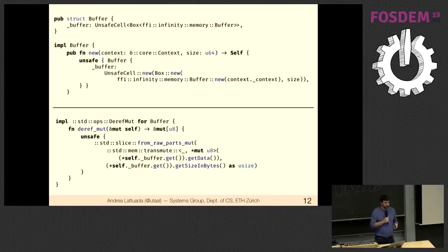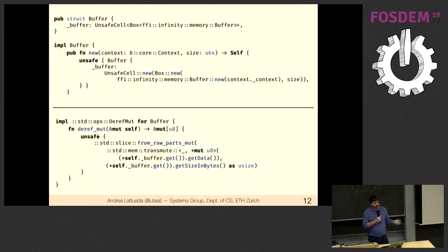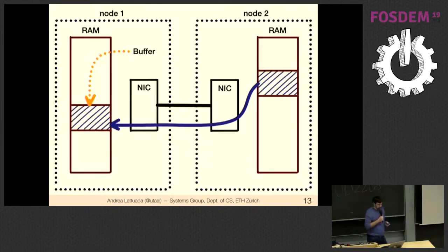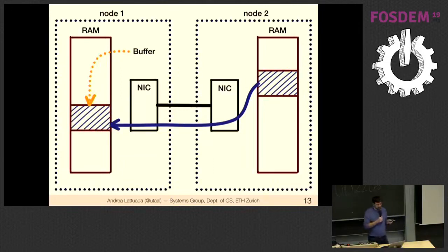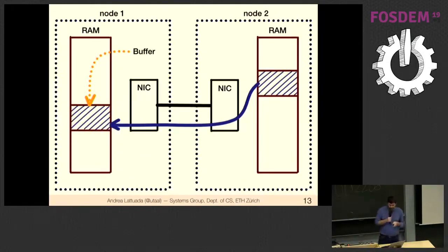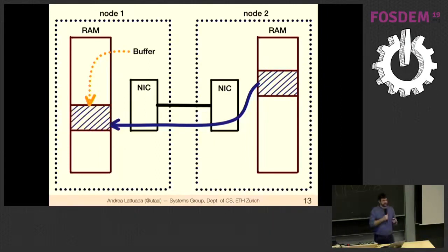We can construct a new buffer by calling through to C++, and we can grab a mutable reference to the underlying memory slice to read and write from it. There's a DerefMut implementation shown, plus a Deref implementation that allows multiple immutable references. But if you think about Rust ownership semantics and data races, this should be a little worrisome — we have a way to construct a buffer and grab a reference, but the network card also has access to this data as soon as the buffer is posted.